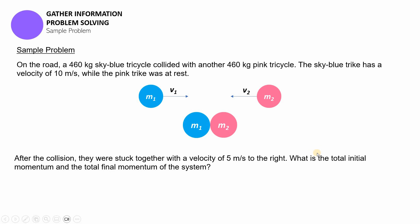Again, to solve this problem we have to first identify kung yung mga givens natin. I've been telling you about listing down your givens, so this time we're gonna start with the first tricycle: its mass is 460 kilograms and then it's moving 10 meters per second and it's positive because it's heading towards the right. The second tricycle naman was also 460 kilograms but it was stationary.